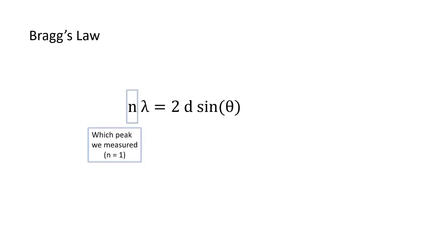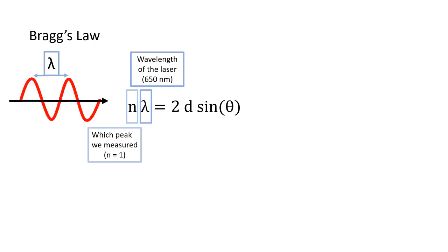The n stands for which peak we measured starting from the center. We measured the distance from the center to the first peak, so n equals 1. This character is called lambda and stands for the wavelength or distance from wave peak to wave peak of the laser. Most red lasers have a wavelength of 650 nanometers. A nanometer is 1 billion times smaller than a meter. Many laser pointers will have the wavelength written on the label.